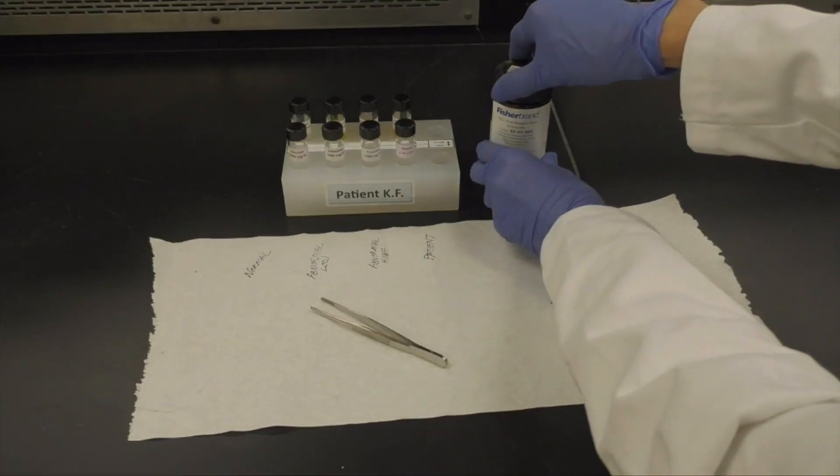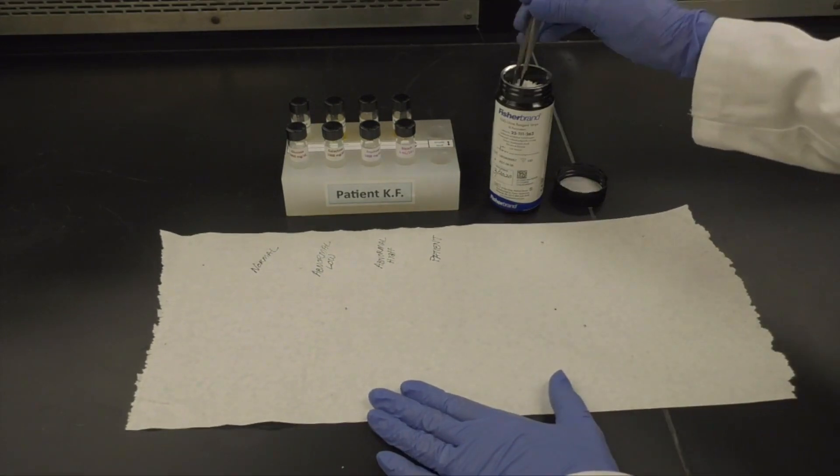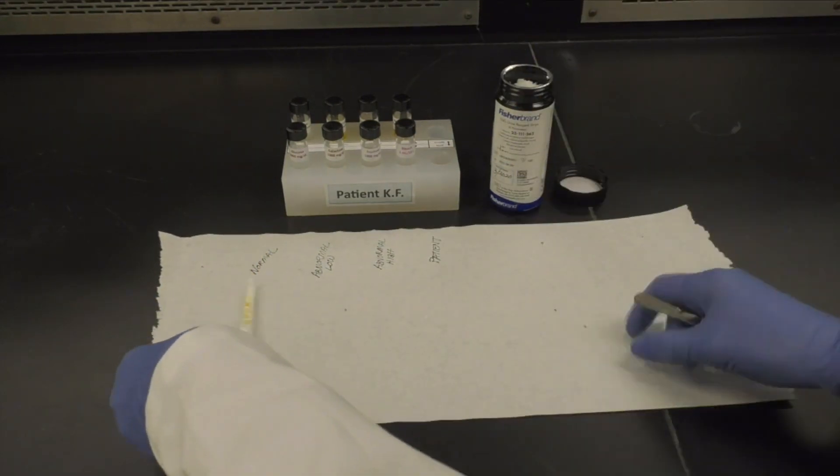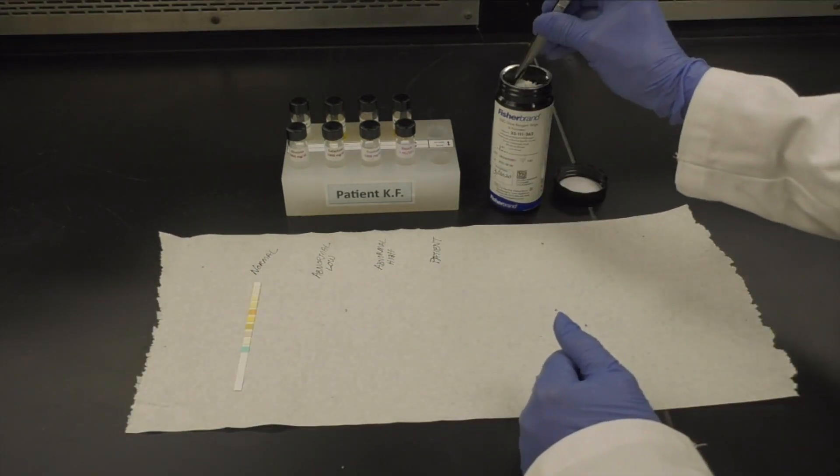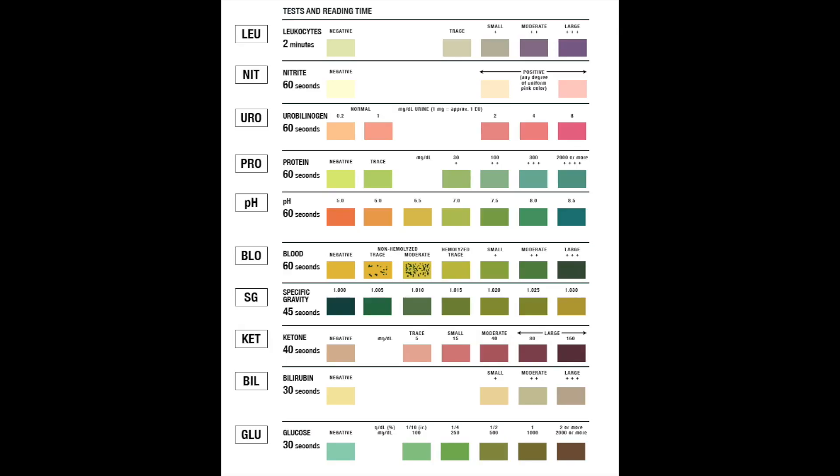We recommend using a paper towel as a background to improve your ability to read the colors and as a way to label the strips. Be aware that you may only need to read specific pads depending on the tests you are interested in interpreting. Refer to your technical guide for specifics.